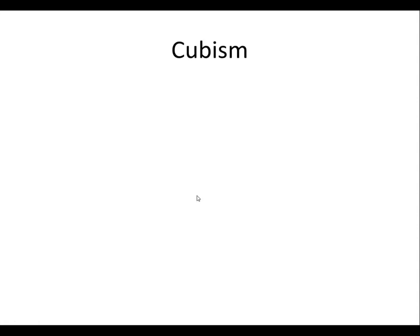I wanted to start our discussion of modern art with the idea of cubism and what cubist paintings looked like, how they came about and how they're reflective of this period of time. We can really center the big cubism movement between 1908 and 1914, understanding that elements of cubism were there before and after, but these are the dates of the heyday of cubism.